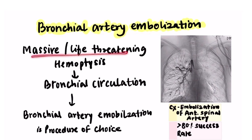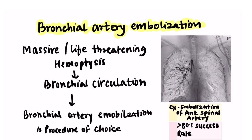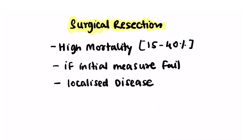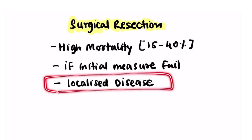Since massive or life-threatening hemoptysis is often due to involvement of the bronchial circulation, bronchial artery embolization is the procedure of choice. A complication is embolization of the anterior spinal artery. It has more than 80% success rate for immediately stopping bleeding. Surgical resection is usually not recommended and is done only if initial measures fail and bleeding persists, if the disease is localized and the rest of the lung parenchyma is normal. It carries a high mortality of 15 to 40 percent.